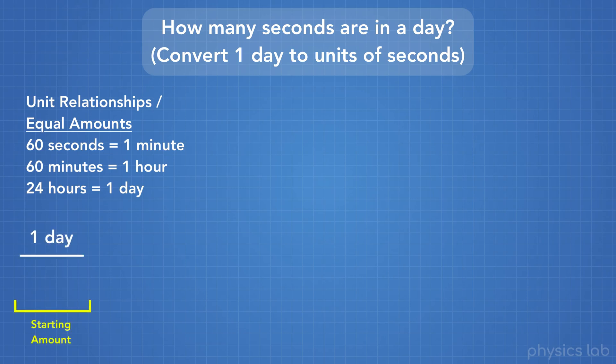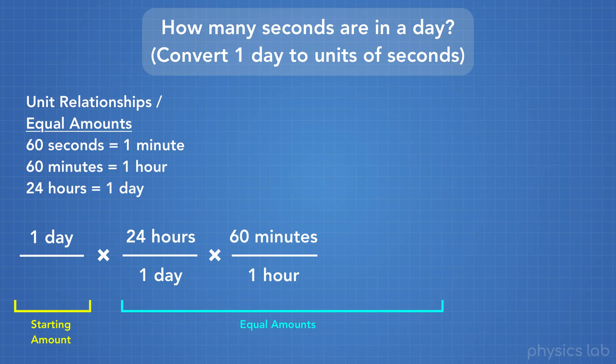Next, we're going to multiply by those unit relationships that we know, which are the amounts of each unit that are equal to each other. We have 24 hours per one day, 60 minutes per one hour, and 60 seconds per one minute. And again, these are all multiplied together.